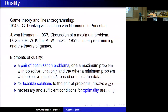Duality can also be used to solve problems. If you find two feasible points — one for the primal and one for the dual — such that their function values coincide, these are typically the solutions. So you want to simultaneously maximize f and minimize h, and when they meet you have the solution.